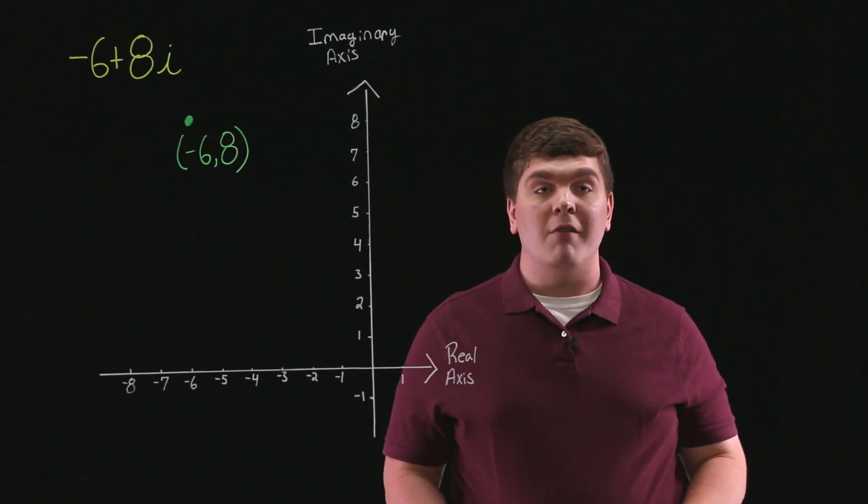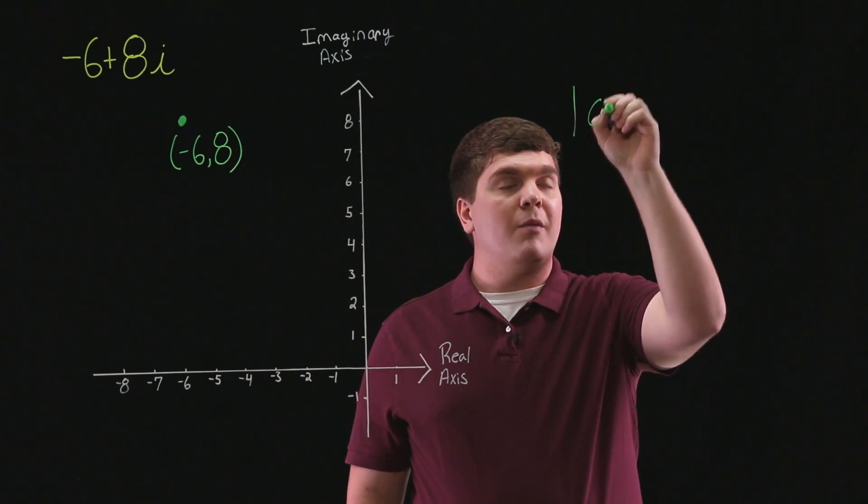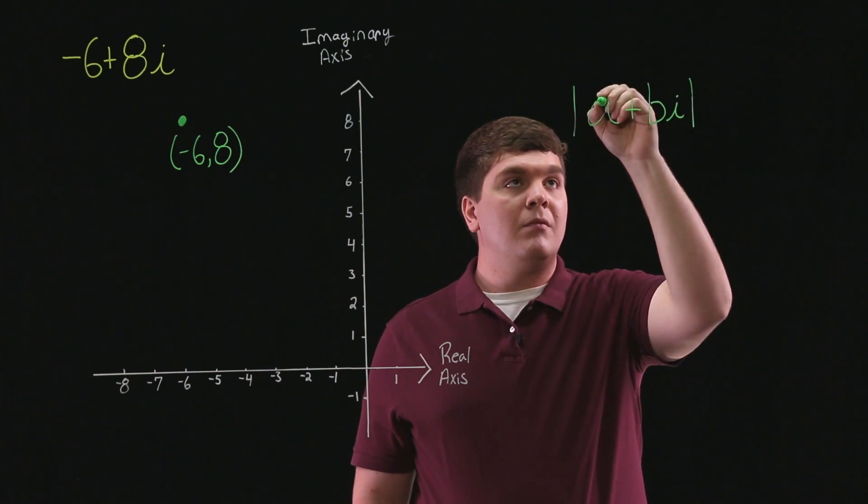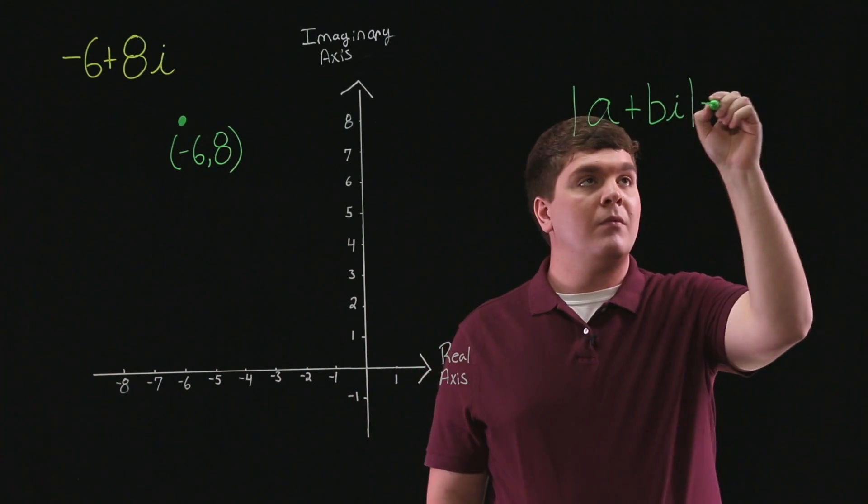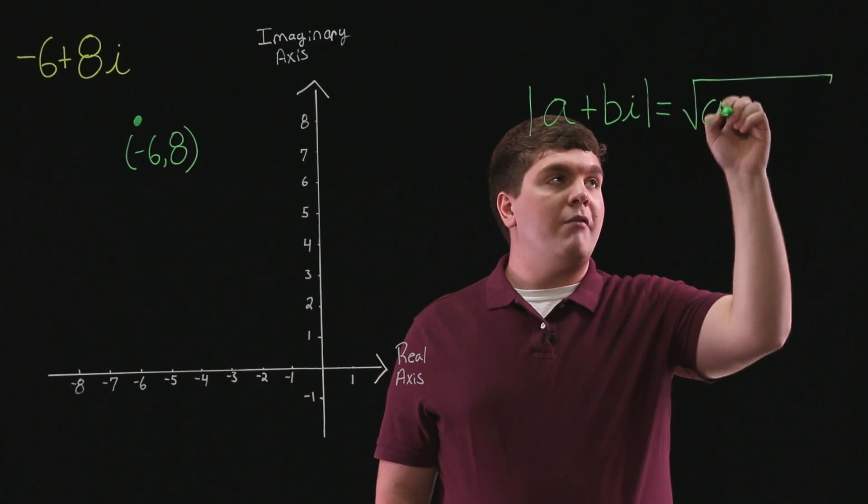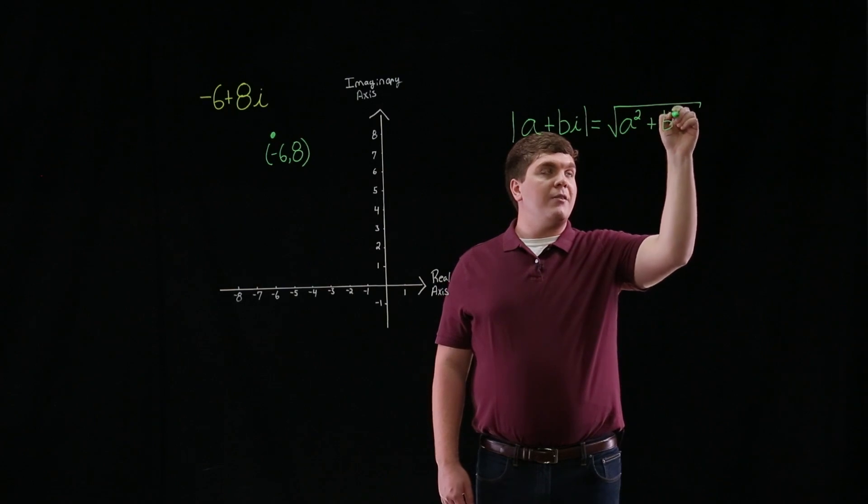To find the absolute value of this point, let's recall that the absolute value of any complex number, a plus bi, is equal to the square root of a squared plus b squared.